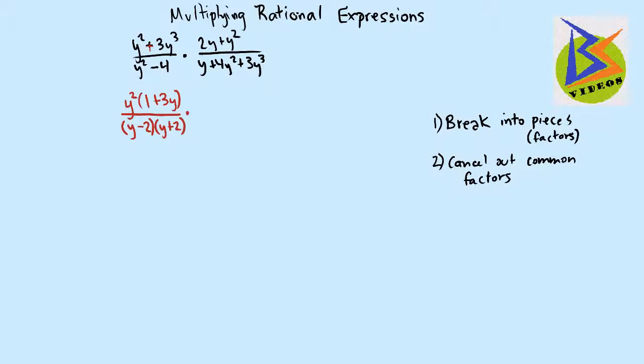Now let's go to the numerator of the second one. We look and we see that we can just pull out a greatest common factor of y. And we're left with 2 plus y.